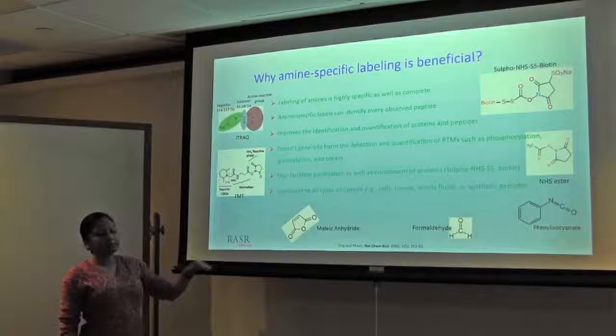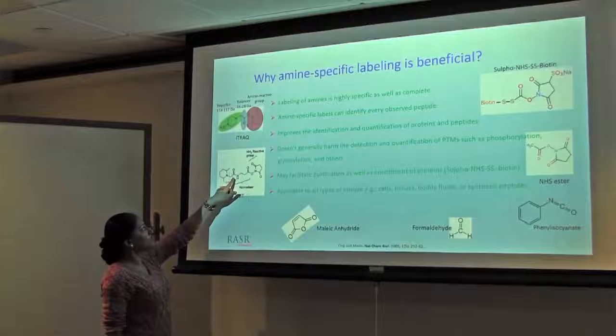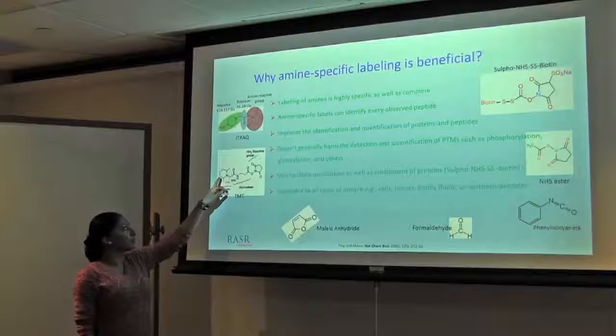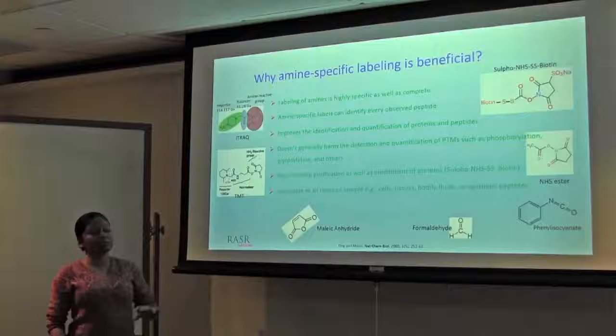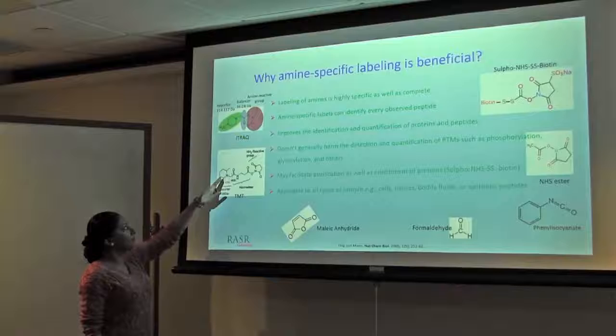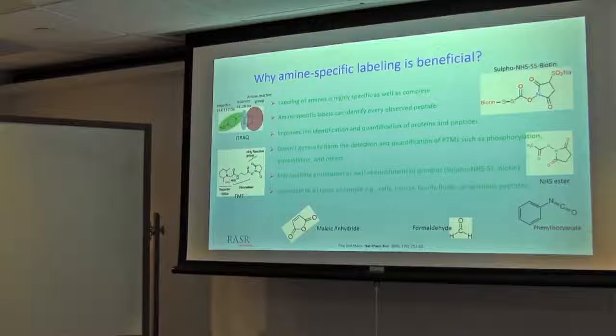Once your peptide is labeled with isobaric tag, it is going to have this composition. In 10 or 12 plex or 12 different variations, only one ion is changing in the balancer. Now, one ion is changing in reporter, and others are changing in balancer. When you are going to do fragmentation using HCD, you will have the reporter ion. Only one of the heavy isotopes will be present there because balancer is not going to come over there.